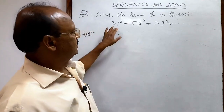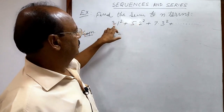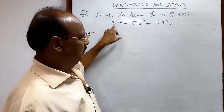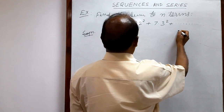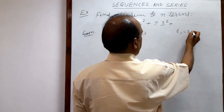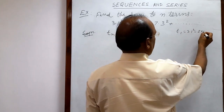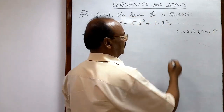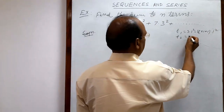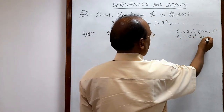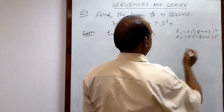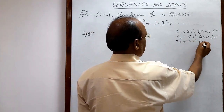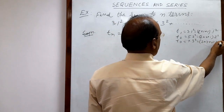To find the nth term, observe the pattern. The first term T1 is 3 into 1 square, which can be written as 2 into 1 plus 1, into 1 square. The second term T2 is 5 into 2 square, written as 2 into 2 plus 1, into 2 square. The third term is 7 into 3 square, written as 2 into 3 plus 1, into 3 square.